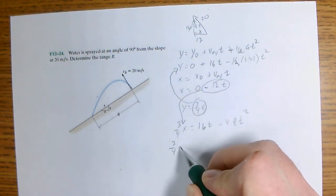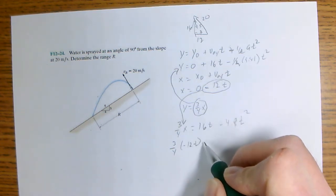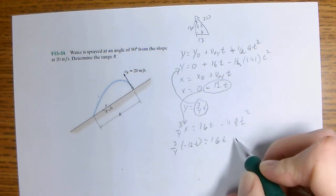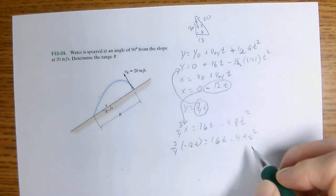So now we have three-fourths of negative 12 T equals 16 T minus 4.9 T squared.